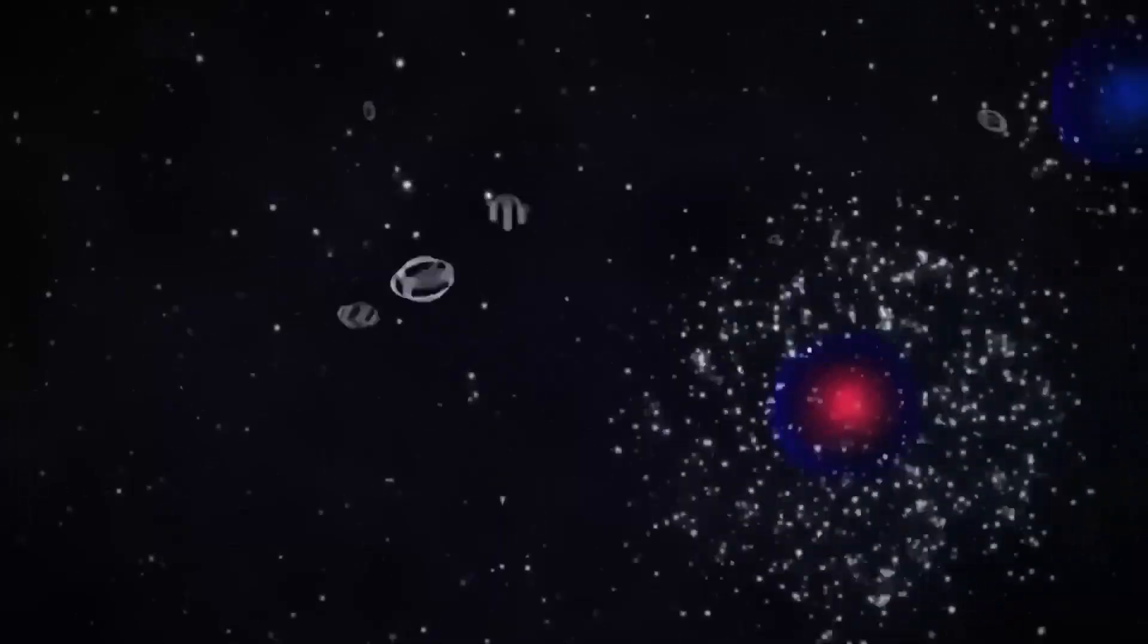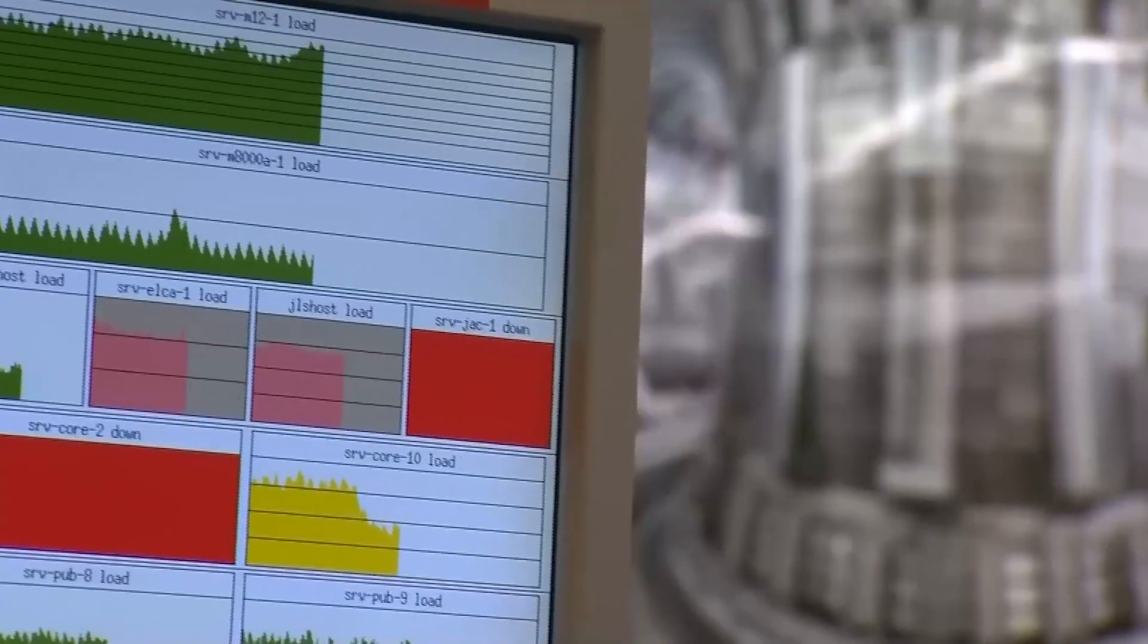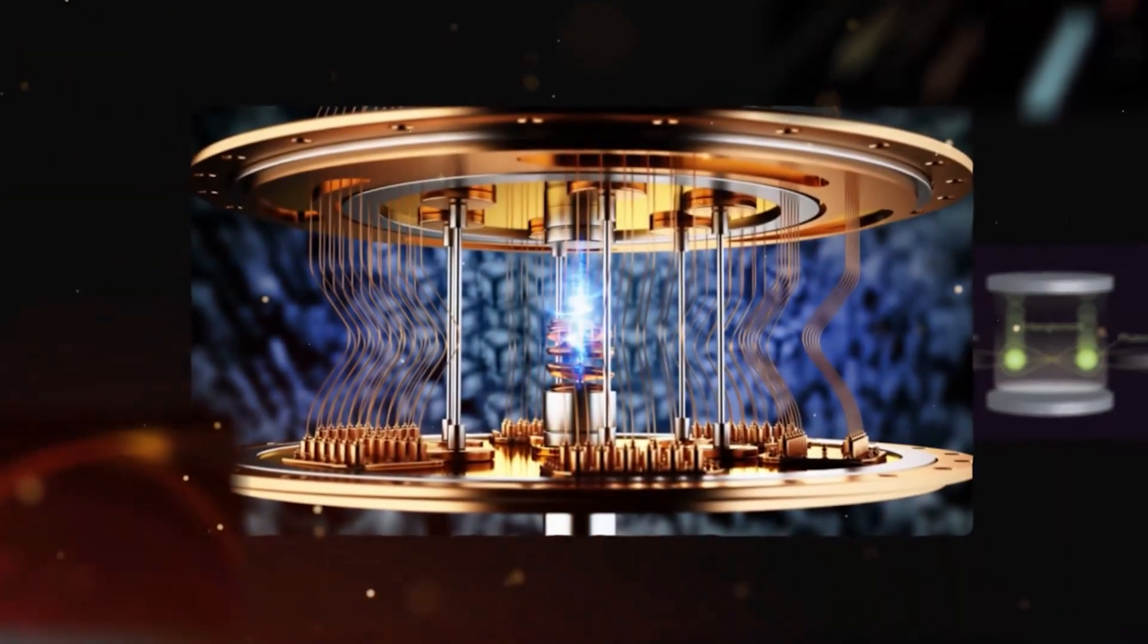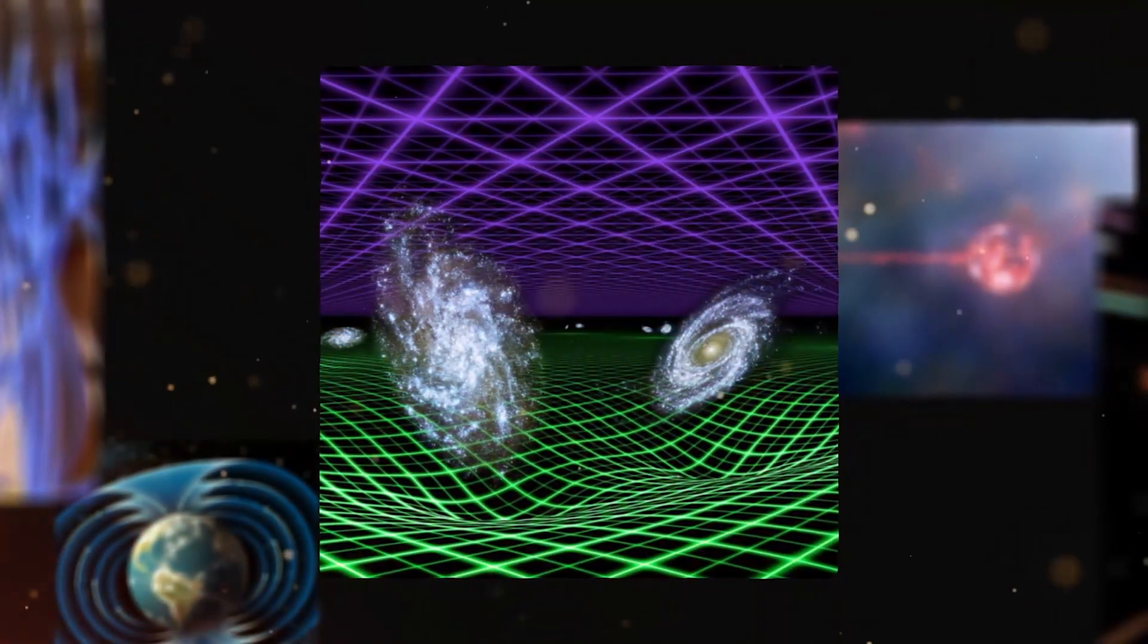What it just uncovered goes beyond gravity, beyond time, and maybe even beyond reality itself. So what did quantum computers find in Einstein's forgotten math? And why does it feel like we were never meant to know?